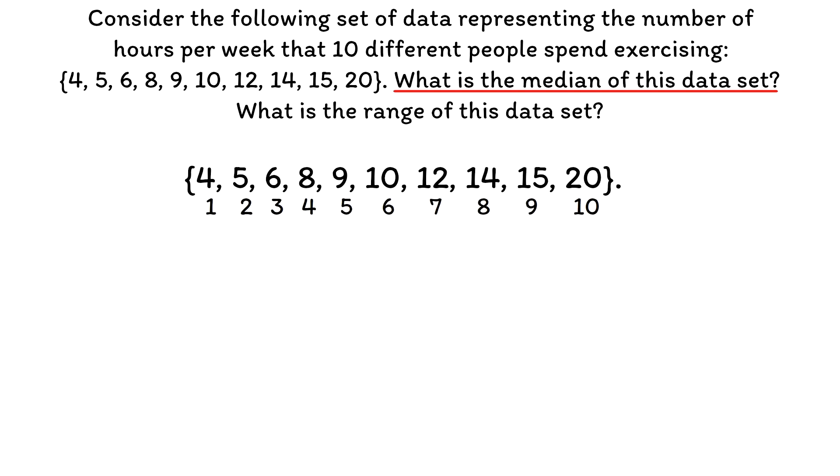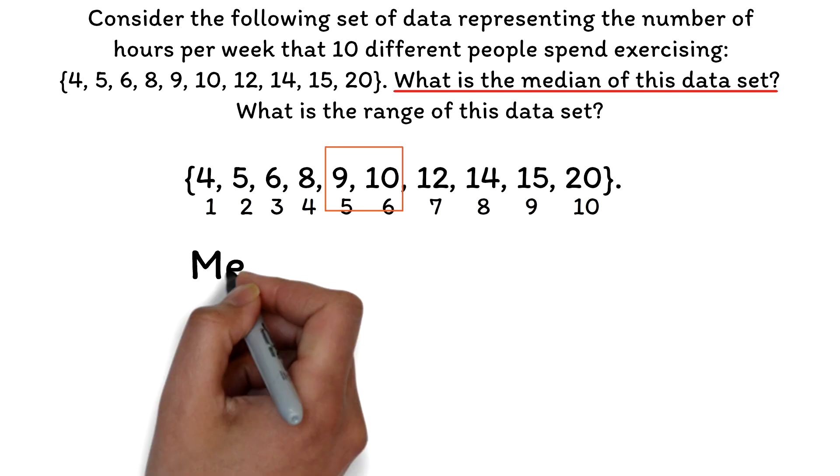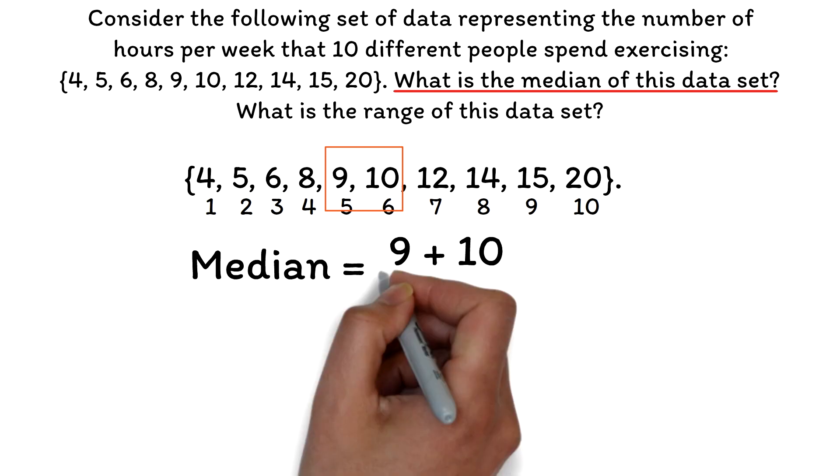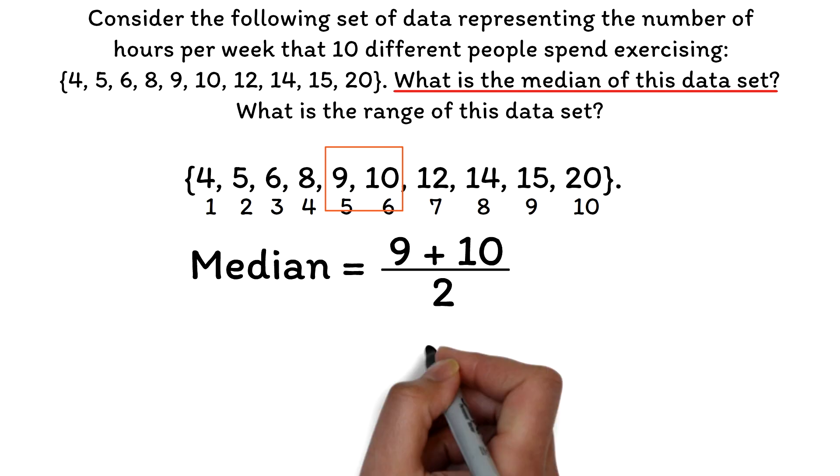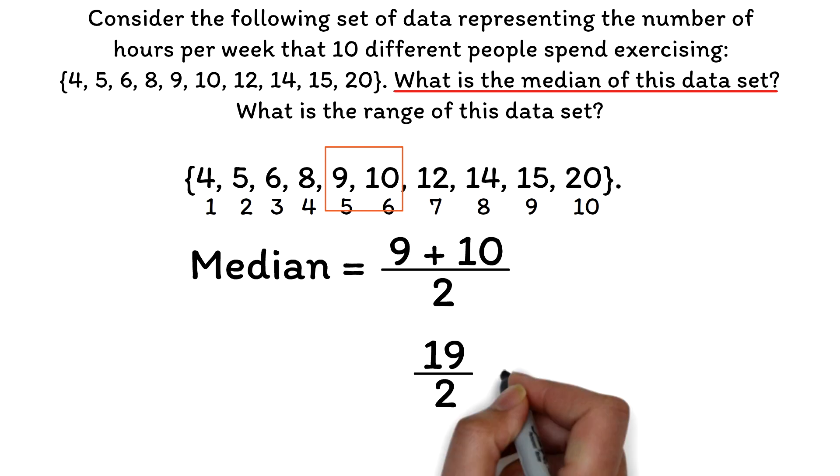The median is the sum of the two middle numbers divided by 2. The set of data given in our question are 10 in number and the middle numbers are 9 and 10. Hence, the median will be 9 plus 10 all divided by 2. 9 plus 10 equals 19. 19 divided by 2 will give 9.5 as the median.